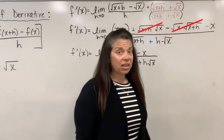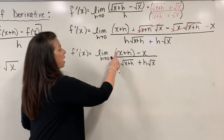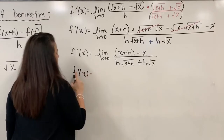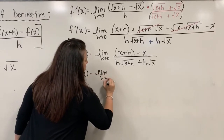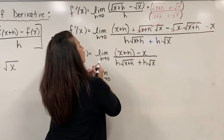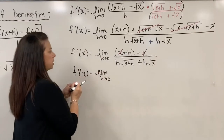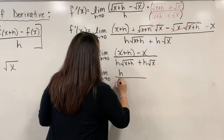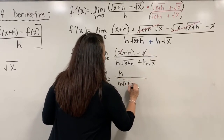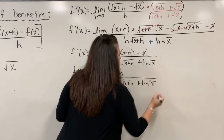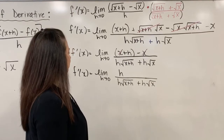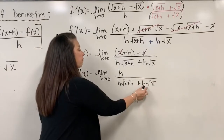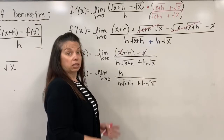I can simplify further in the numerator. I have x and then later subtracting off that x, so those cancel. What's left in my numerator is simply just h. All divided by the existing denominator: h times square root of x plus h plus h times square root of x. I can now factor out the h in the denominator as a greatest common factor.